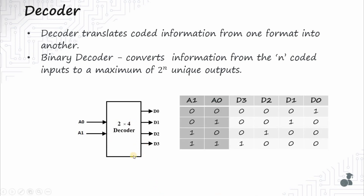This is a 2x4 binary decoder which takes two inputs a0 and a1, and there are four outputs d0 to d3. When the inputs are 0 and 0, d0 is high and the rest are 0. When it is 0 and 1, d1 is high and the rest are 0. When a1 and a0 are 1 and 0, d2 is high and the rest are 0. When it is 1 and 1, d3 is high and the rest are 0. This is the operation of a decoder.